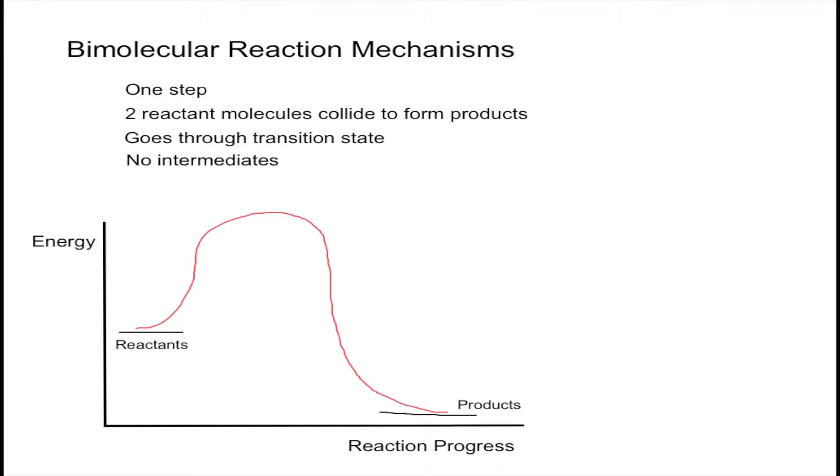So in this video, I'm going to focus on the bimolecular steps. A reaction mechanism with bimolecular steps usually has one step, as you can see in the graph, and it's called bimolecular because, as the name states, there are two reactant molecules colliding to form the product. So you start with two different molecules, there being the 'bi' right here.